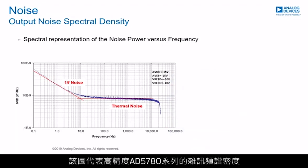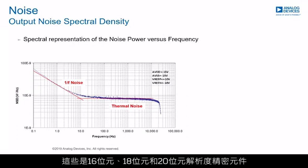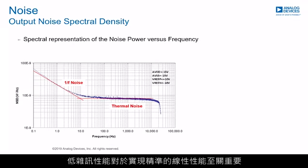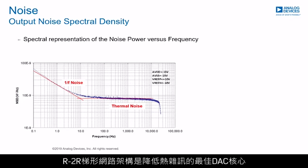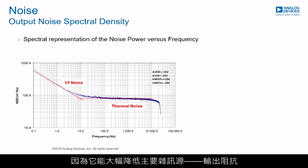The plot represents the noise spectral density for the high-precision AD5780 family. These are a family of 16, 18, and 20-bit resolution precision devices, where the low noise performance is key to achieving accurate linear performance. Essentially, the noise has to be lower than the minimum voltage step, or LSB. The AD5780 family is based on an R2R core. The R2R ladder network architecture is the optimum DAC core for reducing thermal noise, as it minimizes the output impedance, which is the dominating noise contributor.